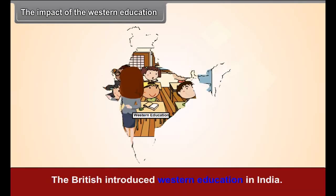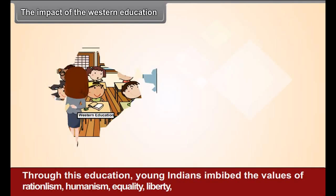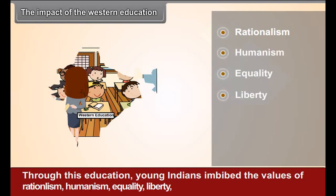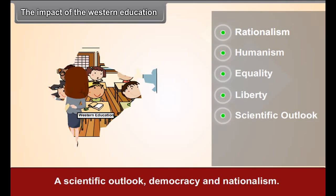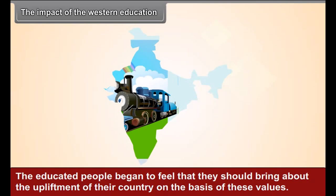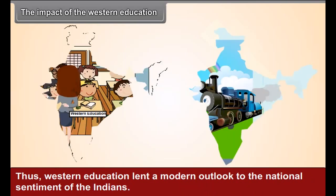The Impact of Western Education: The British introduced Western education in India. Through this education, young Indians imbibed the values of rationalism, humanism, equality, liberty, a scientific outlook, democracy, and nationalism. The educated people began to feel that they should bring about the upliftment of their country on the basis of these values. Thus, Western education lent a modern outlook to the national sentiment of the Indians.